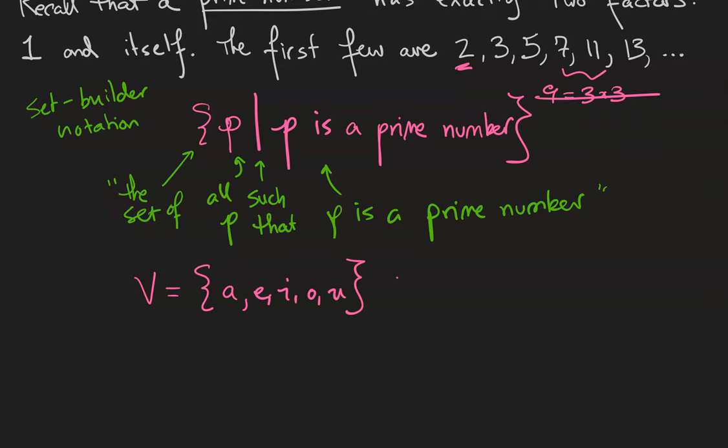And I can write the same set down in set builder notation. V is the set of all stars such that star is a vowel. Notice I used star to refer to the elements of the set instead of a letter, because it's kind of confusing to have letters be the elements and also letters be the name of the elements.